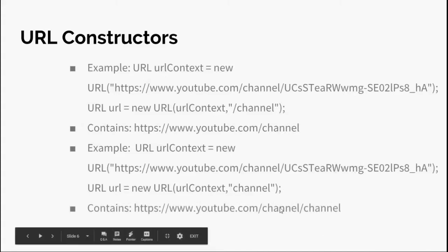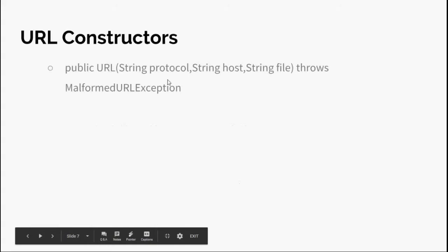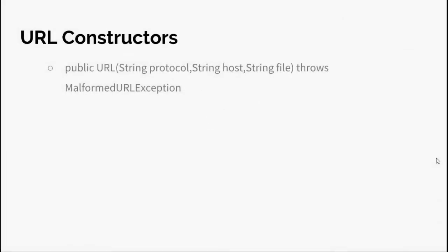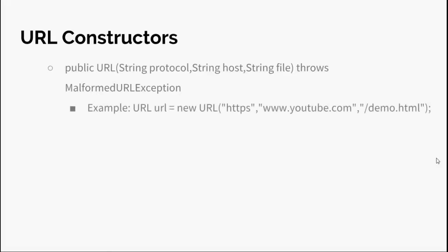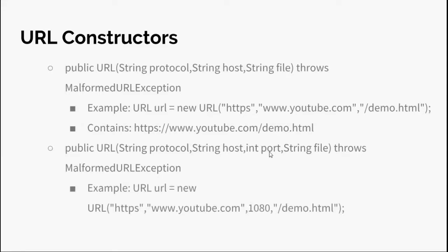The third constructor is public URL(String protocol, String host, String file) throws MalformedURLException — it creates a URL object from the specified protocol, host, and file. A fourth constructor adds a port number parameter, allowing you to specify a port such as 1080.